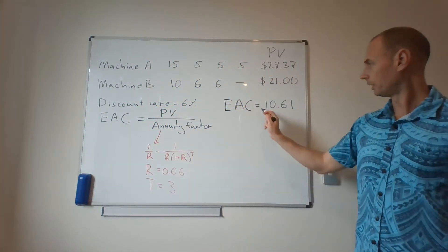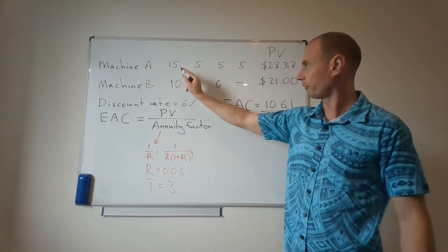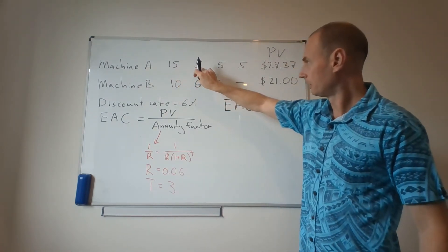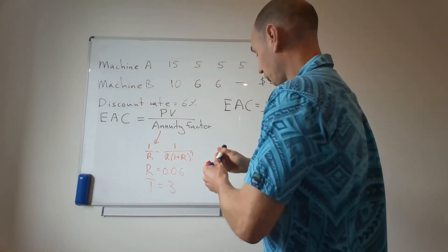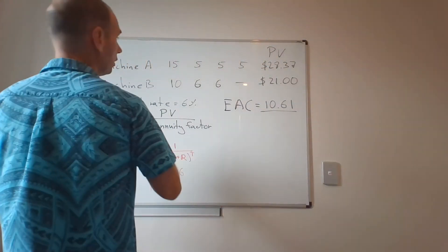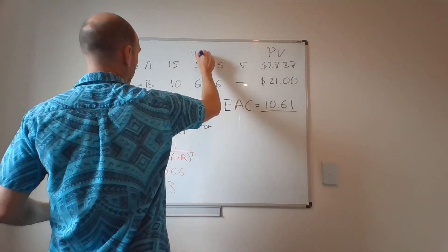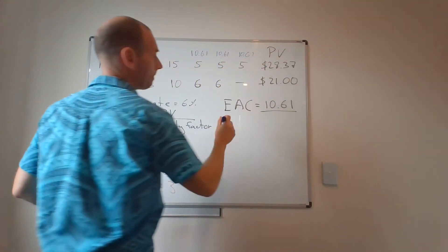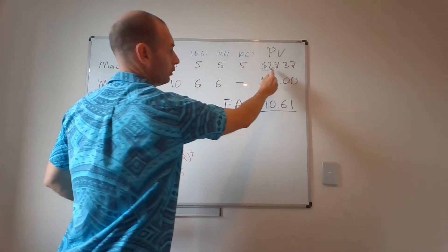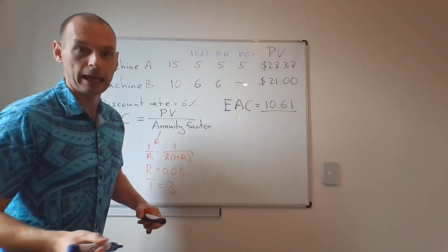So again, if instead of spending 15 here, spending 5, 5, and 5, if you just were to rent it year-on-year, you spend 10.61, 10.61, 10.61 with the present value against the same as 28.37.